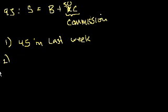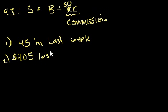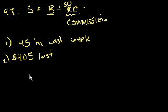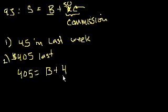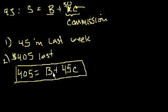Statement 2: last week's salary was $405. In order to figure out what we need, we need to know how much of his salary in any given week is base, and how much commission does he get per unit. Using both statements: last week he sold 45 items and made $405, which equals base plus 45 times c.